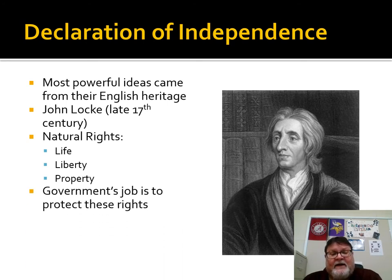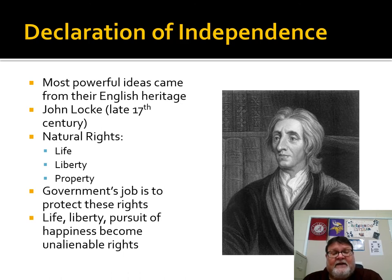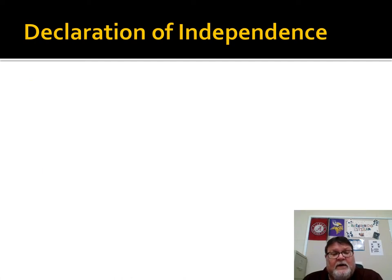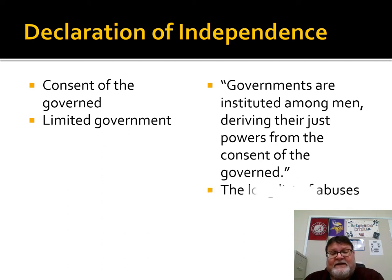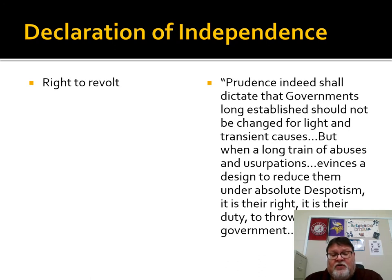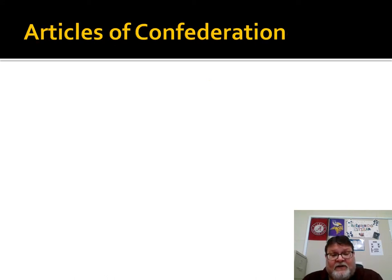It's government's job to protect these rights, and life, liberty, and the pursuit of happiness become the unalienable rights Jefferson writes about. Consent of the governed is another key concept, visible in the document itself. It's also a document of limited government, shown by that long list of abuses attributable to the king. There's also the idea of the right — even the duty — to overthrow a government that is not doing its job, which is to protect those natural rights. The government of Great Britain was not doing that.